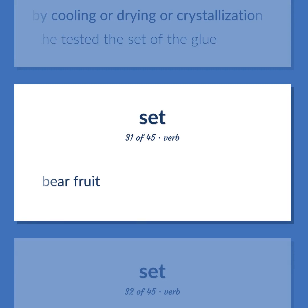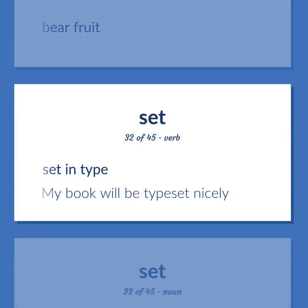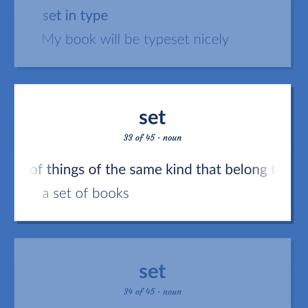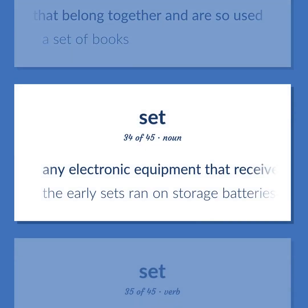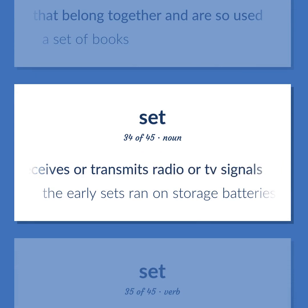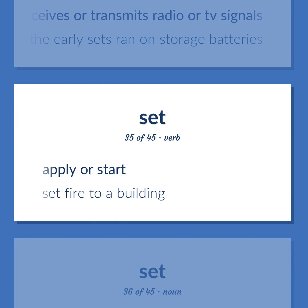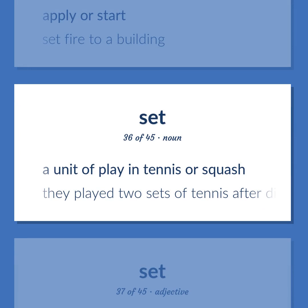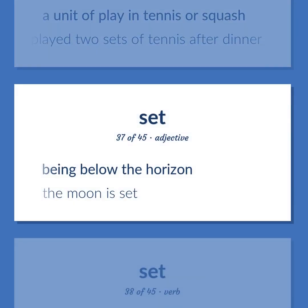Set: Bear fruit. Set in type — 'My book will be typeset nicely.' A group of things of the same kind that belong together and are so used — 'A set of books.' Any electronic equipment that receives or transmits radio or TV signals — 'The early sets ran on storage batteries.' Apply or start — 'Set fire to a building.' A unit of play in tennis or squash — 'They played two sets of tennis after dinner.' Being below the horizon — 'The moon is set.'